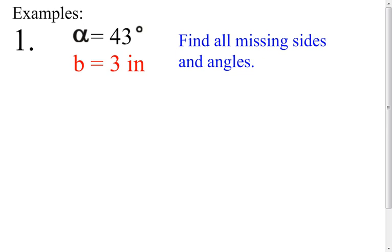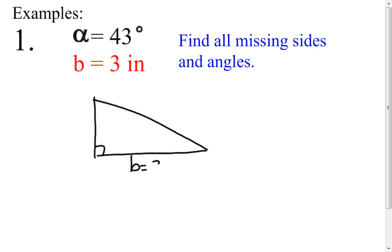Here is our first problem. I'm going to give you some information. You need to know that this is a right triangle — SOHCAHTOA can only be used on right triangles, no other kind. I'm going to draw my triangle. Side B is three inches, and I'm given angle alpha which is 43 degrees. Side A is unknown, side C is unknown, and angle beta is unknown.